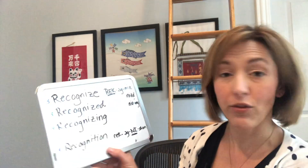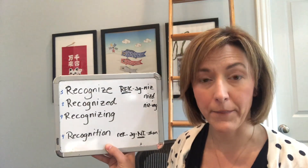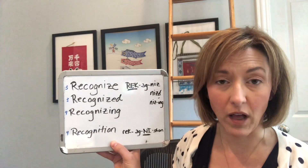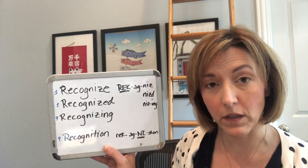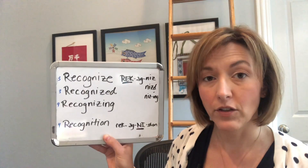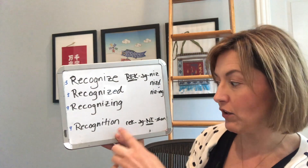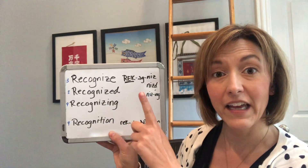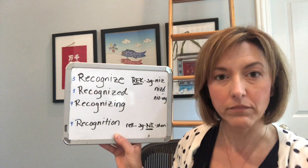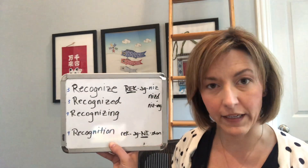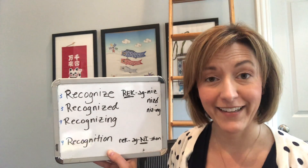Lastly, we have the word 'recognition.' This word really throws people off because we shift the syllable stress to the syllable before the -tion — I have a class on this concept as well. This word has four syllables, but we shift the word stress from 'rec' to 'ni.' That's why I have it underlined and in capital letters. So: rec-o-g-ni-tion, recognition, recognition, recognition.